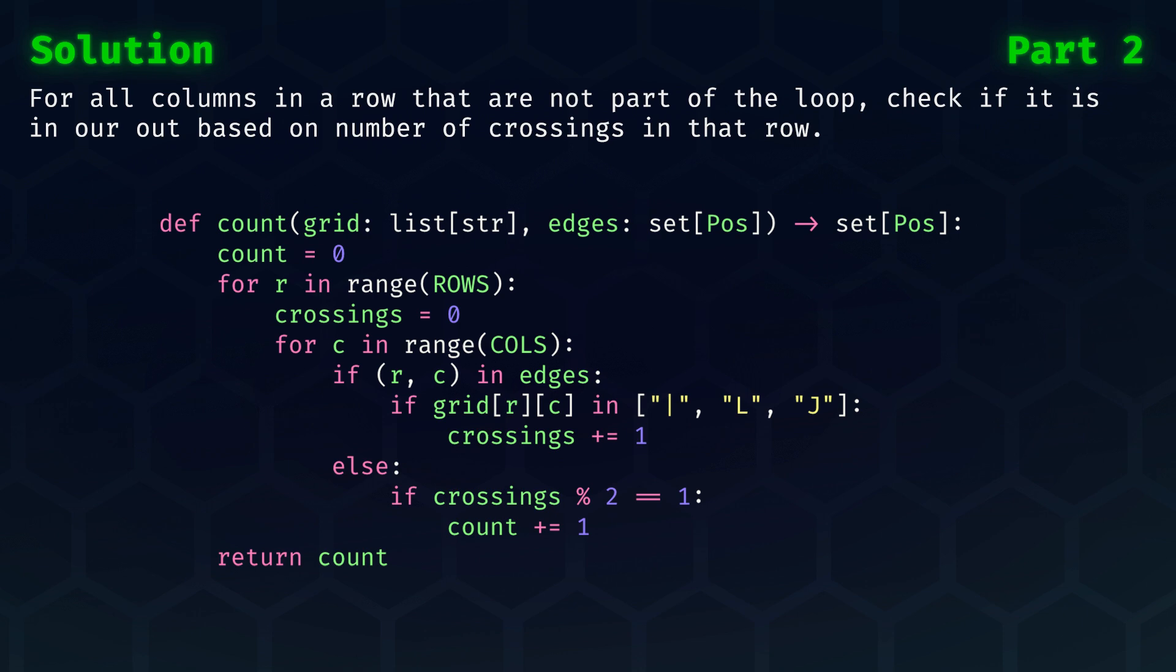So, we initialize our count to zero, and then for every row we initialize the number of crossings to zero. Then for every column we check, is that position in the set of positions that form the edges of the loop? If it is, then we check if the symbol is any of the crossing symbols.